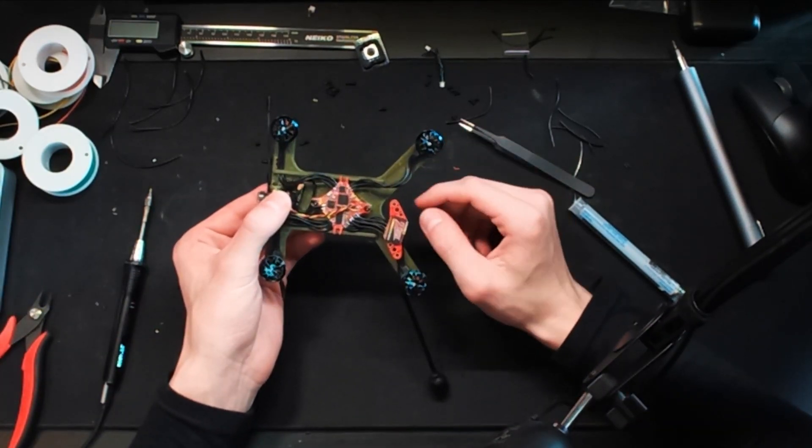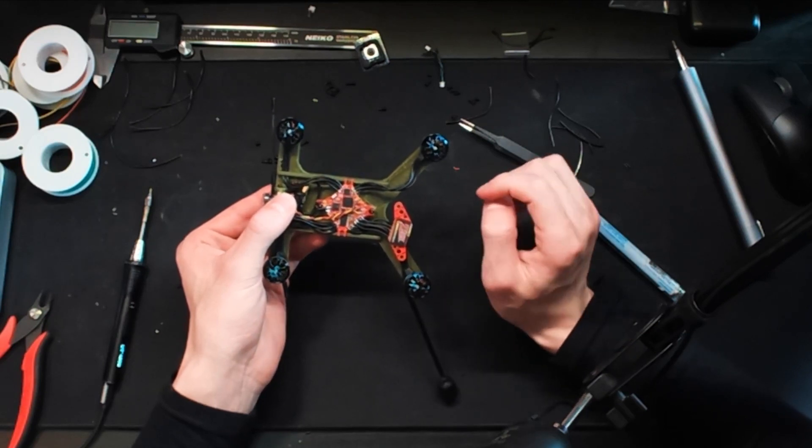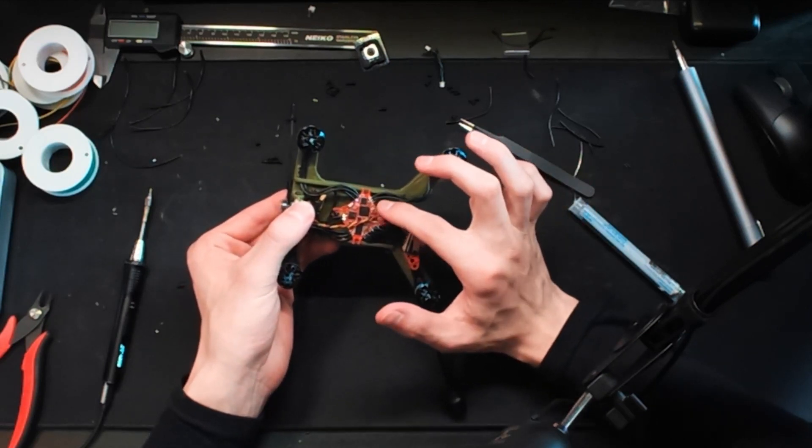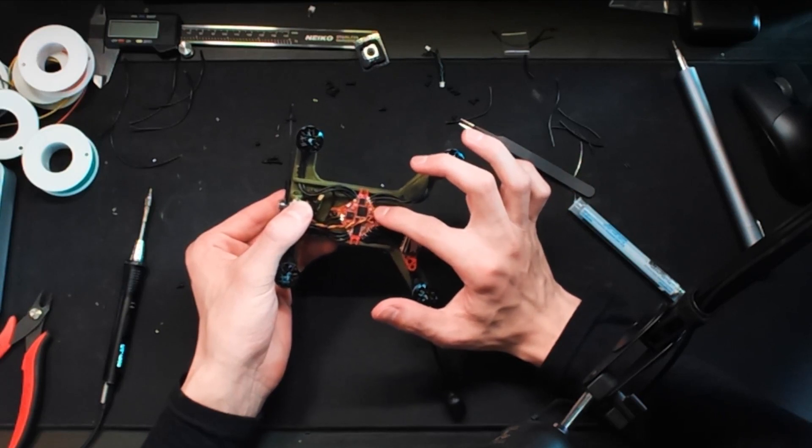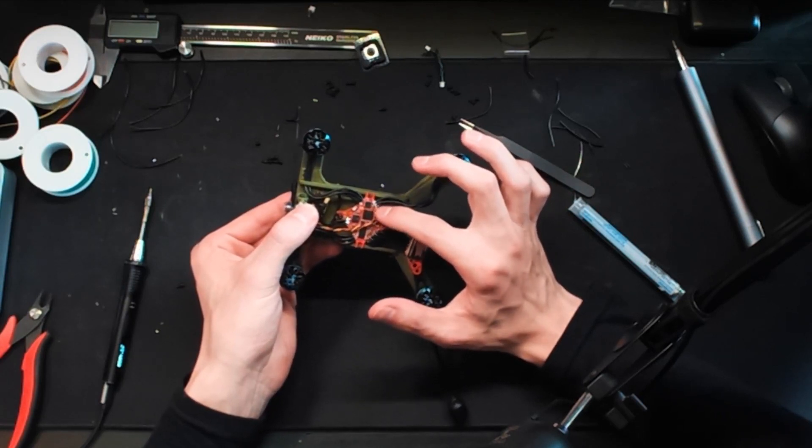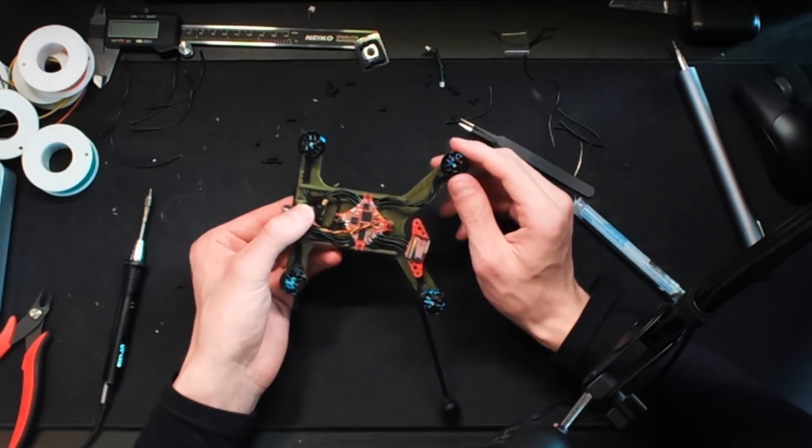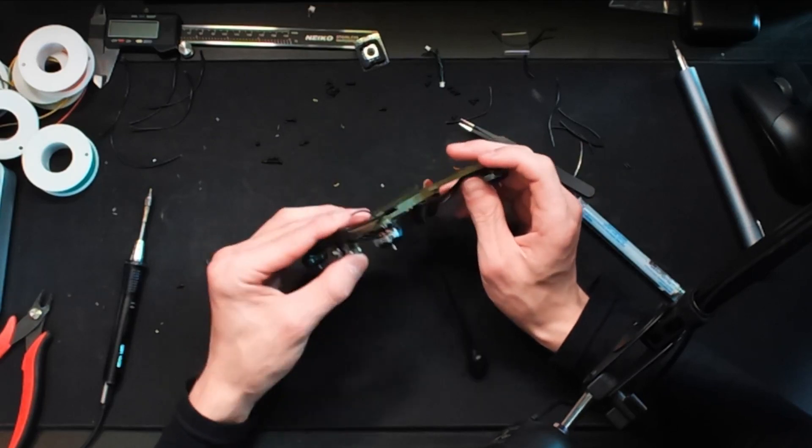And there we have it. All I need to do now is mount the video transmitter and give ourselves an XT30 or whatever connector batteries you are using right to these pads here. And in theory we have a fully functional drone.